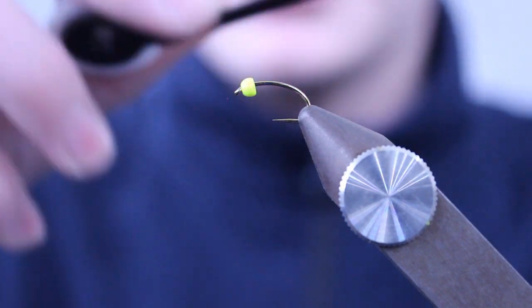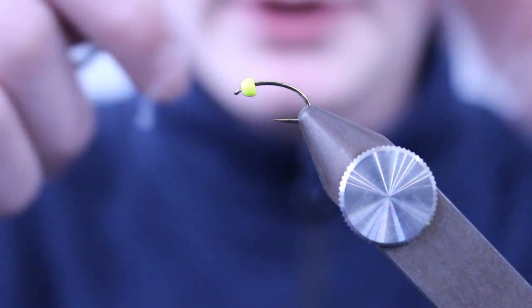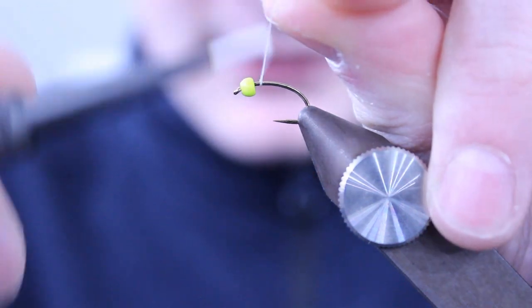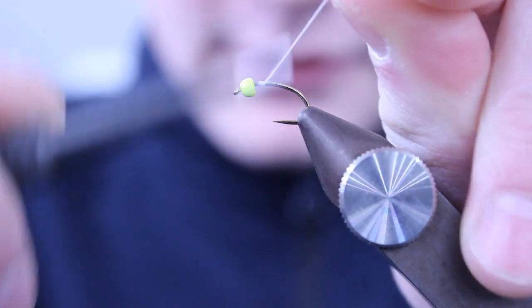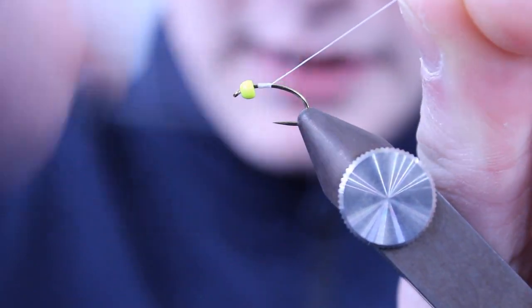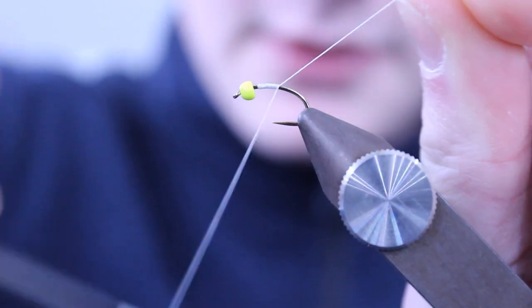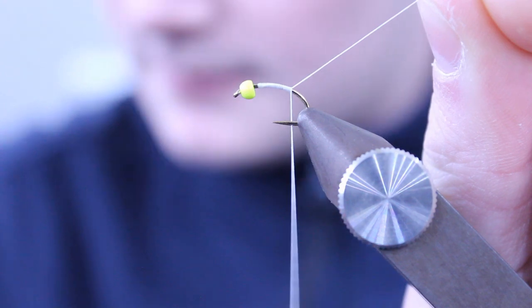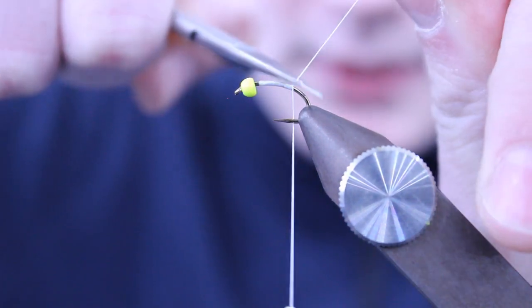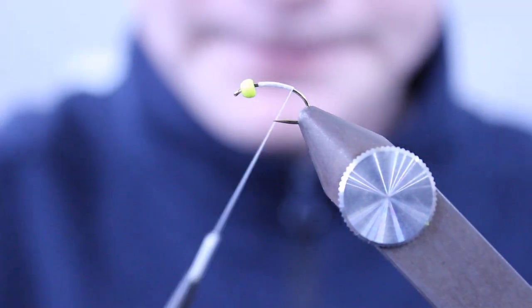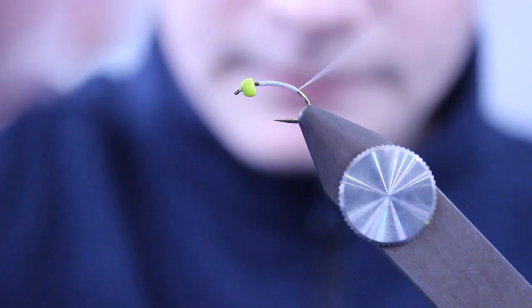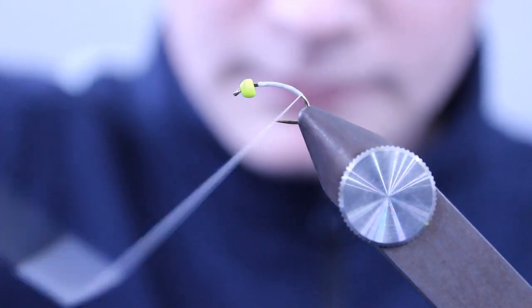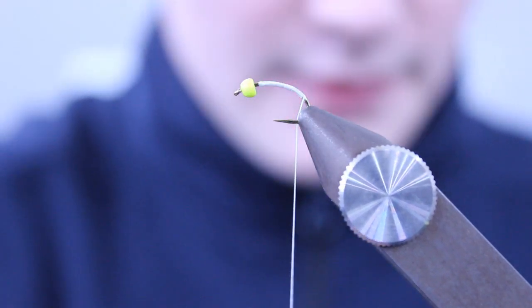To start the fly off, I'm going to be using glow bright floss number 16. Catch your floss in and start taking your floss down the hook in touching turns. Cut away your waste piece. Take your floss down to the end of the hook.